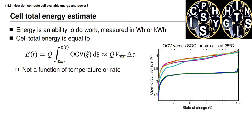The total energy available in a cell has something to do with the voltage relationship between a minimum state of charge and the present state of charge and a total capacity. This is sometimes adequately approximated by taking the nominal capacity and multiplying by the nominal voltage and multiplying that by the difference of state of charge between the present operating point and the minimum permitted state of charge.